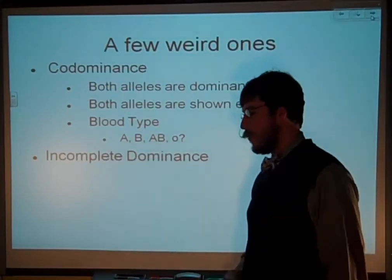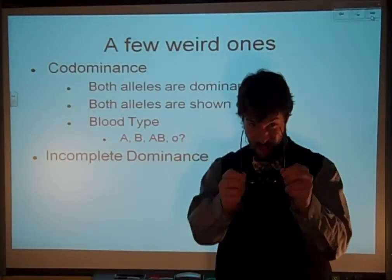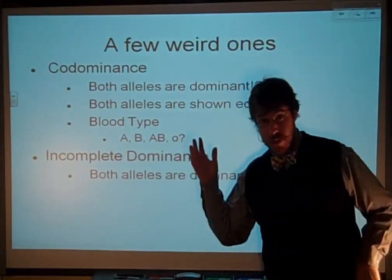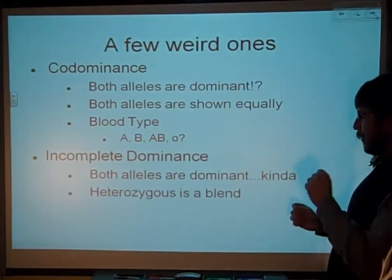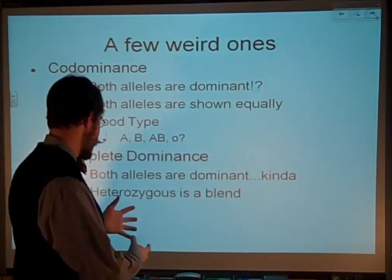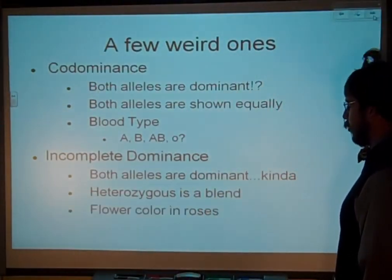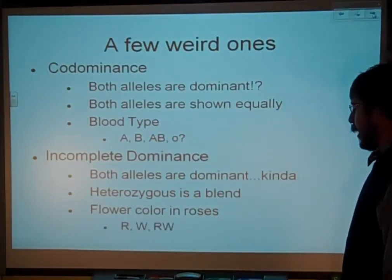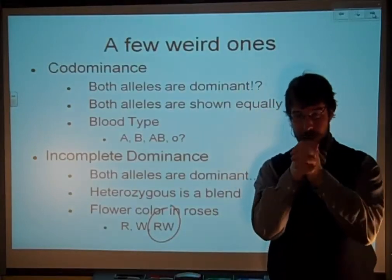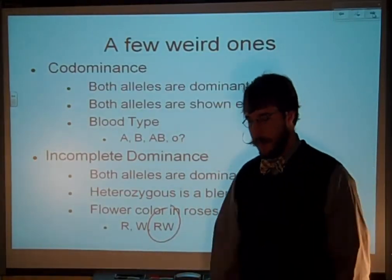There's also incomplete dominance, which is a little different from co-dominance — sometimes people lump these together, but technically they are different. Incomplete dominance is where both alleles are dominant, but they compromise. When you get the heterozygous, A and B come together and you get a blended phenotype we'd call C. A great example is flower colors — in roses you can have red or white, but if you get red and white together, they actually look pink. They blend. That's different from AB blood type, which gives you A and B proteins simultaneously.